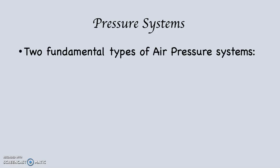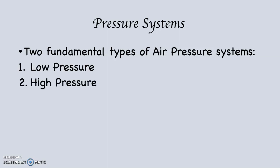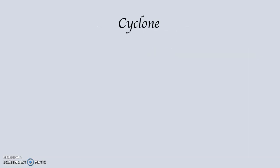There are two fundamental types of air pressure systems: low pressure and high pressure. Of course, there are more technical scientific names for these two things. I generally refer to them as low pressure and high pressure — those are perfectly fine names — but there are technical scientific names you need to know.